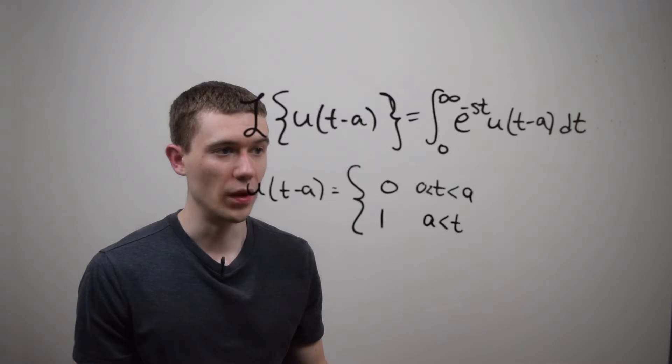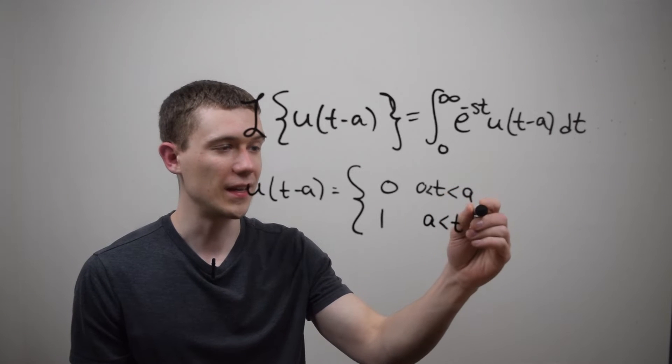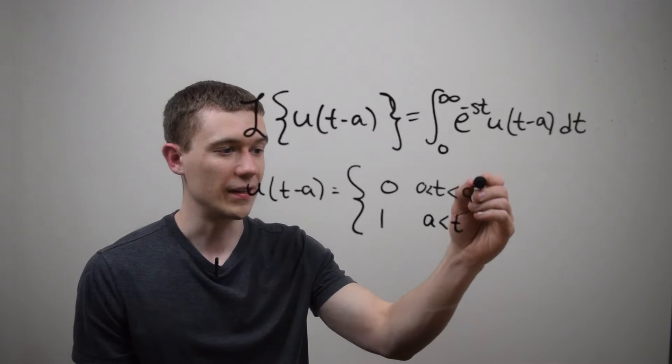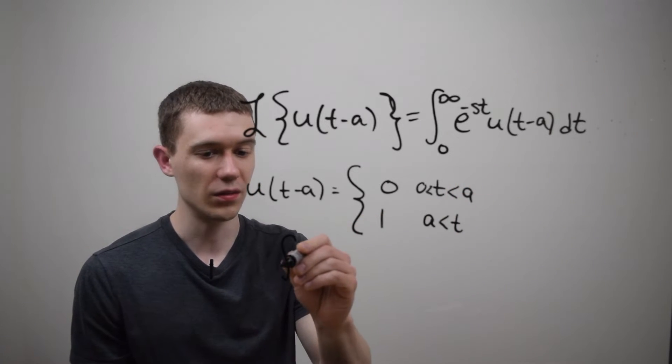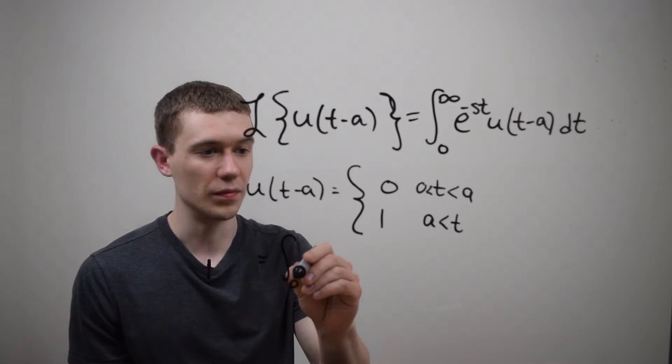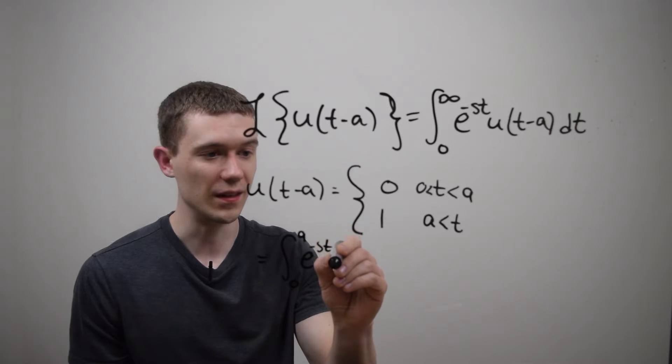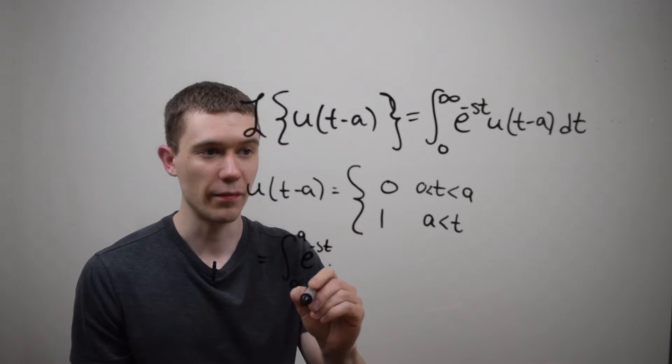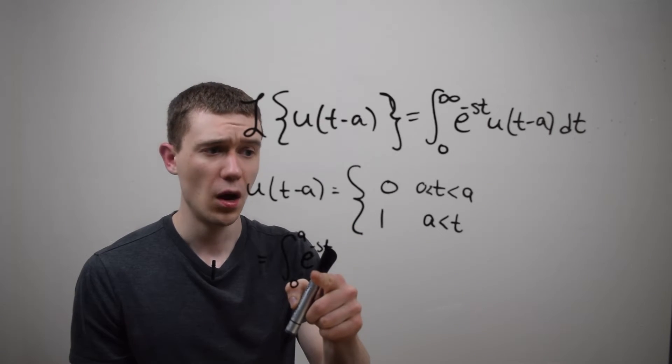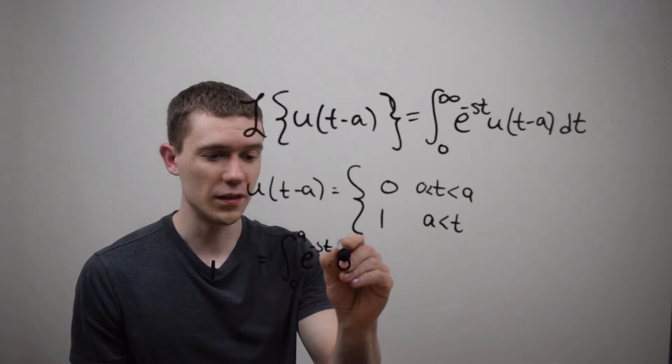So what this does, this has the effect of taking this integral and splitting it into two pieces. So this is going to be the integral from zero to a of e to the minus st times whatever the step function is on this interval. Well from zero to a, the step function is just zero.